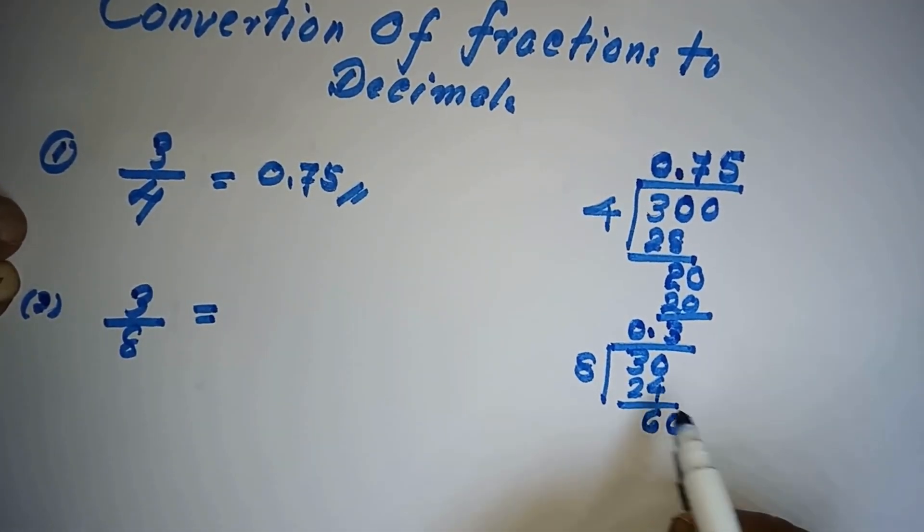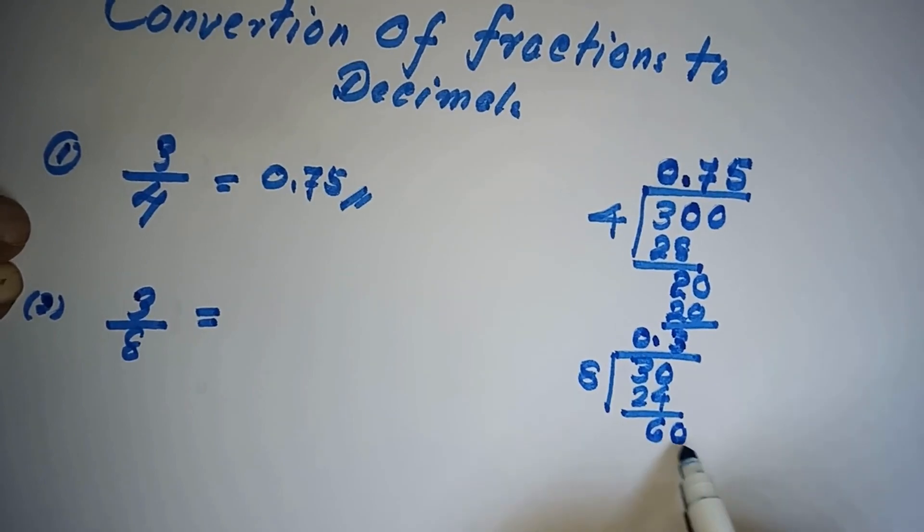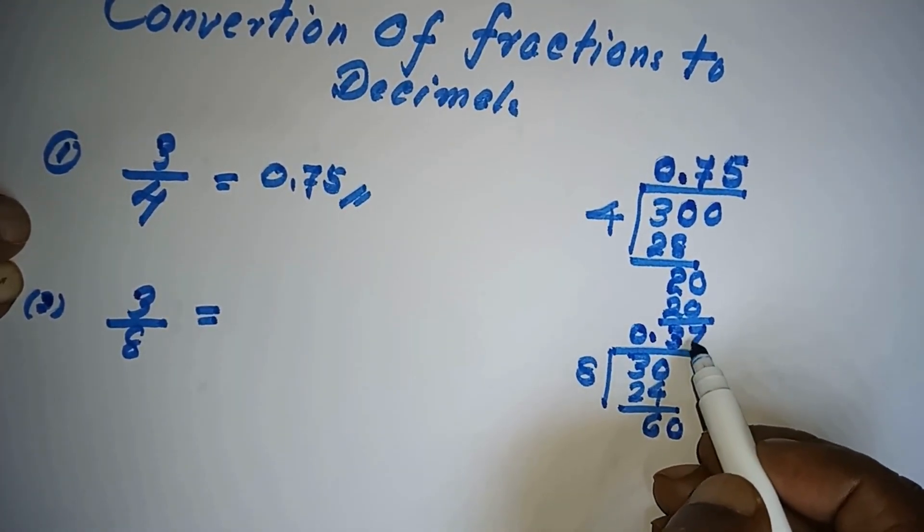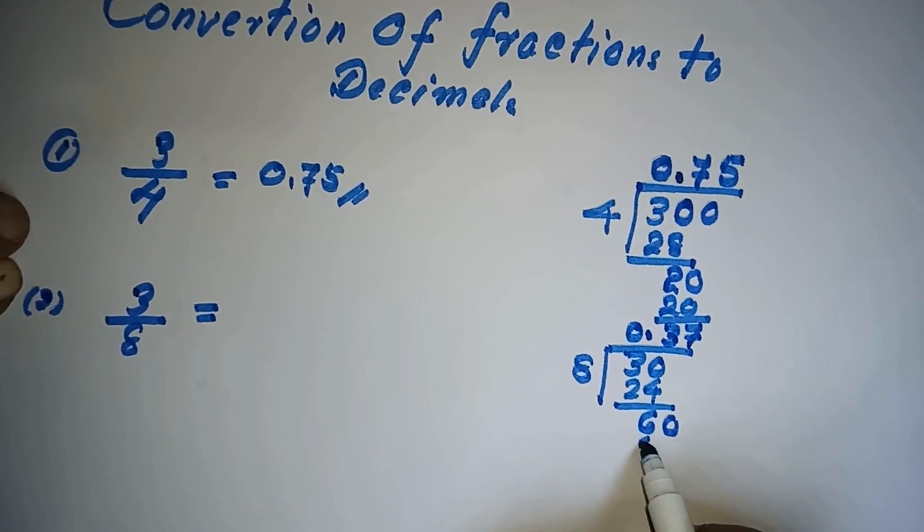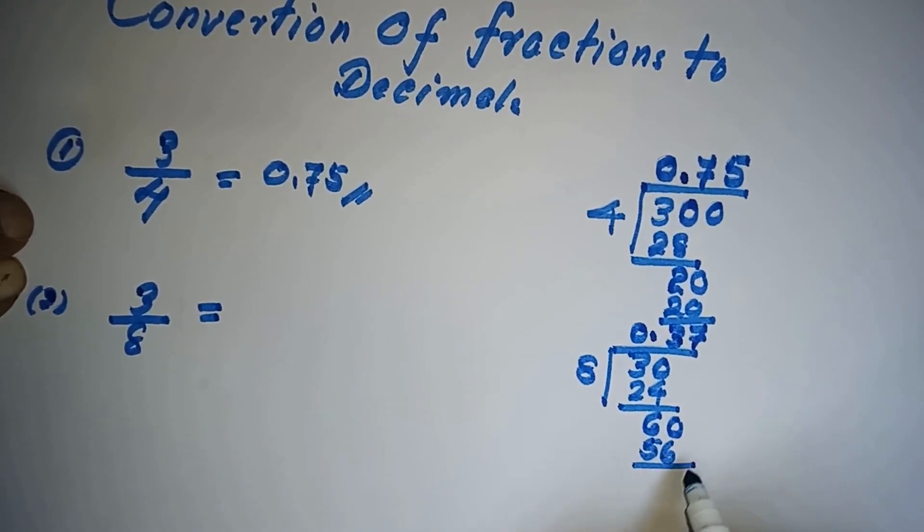How many 8's are there for 60? It is 7. 8 times 7 is 56, so the balance is 4.